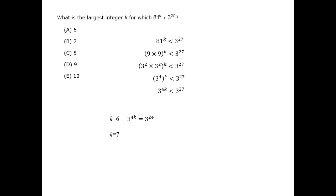If k equals 7, then 3 to the 4k power equals 3 to the 28th power. That's larger than 3 to the 27th, as it's 3 to the 27th times one more 3. Therefore, k equals 6 is the last value before the left side gets bigger than the right side. The correct answer is A.